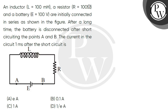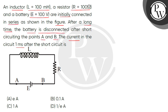Let's read the question. An inductor L equals 100 mH, a resistor R equals 100 ohm, and a battery equals 100 volt are initially connected in series as shown in the figure. After a long time, the battery is disconnected after short-circuiting points A and B. The current in the circuit 1 millisecond after the short circuit is?